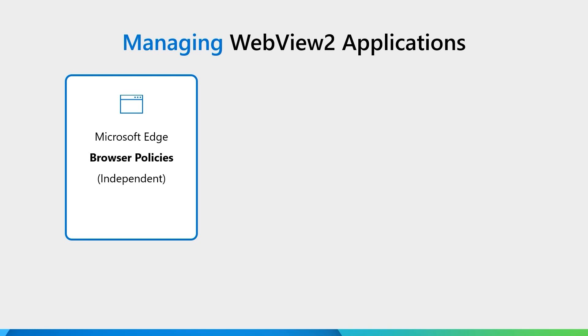You can manage WebView2 applications via group policies. These group policies can be set in Intune or Config Manager. There are three sets of group policies to think about. The first are the Microsoft Edge browser policies. These policies govern how the browser behaves. WebView2 applications are independent of the Microsoft Edge browser policies. This way, as an IT administrator, when setting group policies for the browser, you do not need to worry about how those will affect WebView2 applications. For example, if you disable JavaScript on certain websites, you don't have to worry about that affecting JavaScript-based experiences like Meeting Insights in Outlook.